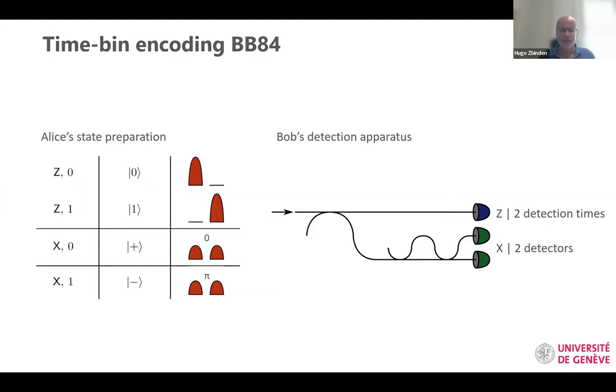This allows us to send information. Now, if we just do this, it wouldn't be safe because Eve could do exactly the same like Bob and detect and resend. In order to prevent that, we have our basis, which is called the X basis. From time to time, we will send a superposition of the photon being early and late. If we send this coherent superposition and Eve tries to measure the arrival time of the photons like in the Z basis, she will destroy this coherence between the two pulses.